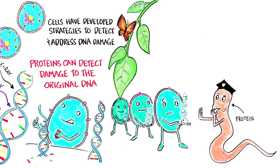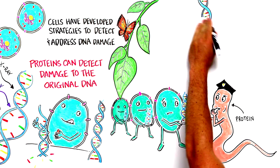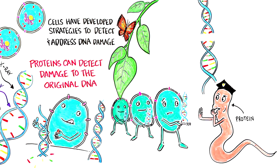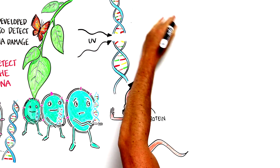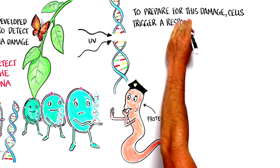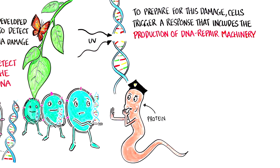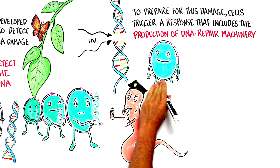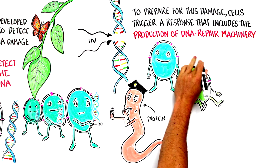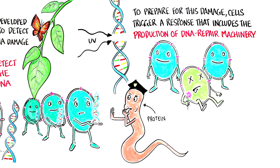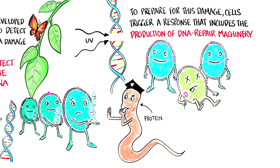In some cases, the cells can repair the damage. For example, if it was caused by UV rays, the problem might be that neighboring parts of the strand are bonded together in a way they shouldn't be. To repair this type of damage, cells trigger a response that includes the production of DNA repair machinery. Human cells, and cells from other mammals, have another option if the damage is very severe: the DNA damage response may instruct the cell to kill itself for the sake of keeping the organism safe and healthy. This approach helps protect against cancer and other diseases.